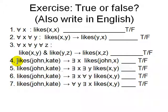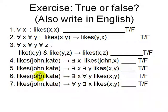Given John likes Kate: Is it true that there exists somebody John likes? Yes, that's true. Is there an X and a Y such that X likes Y? Yes, that's also true. Is there an X such that X likes everyone — For all Y, Likes(X, Y)? No, that's not the case. So that's about quantifiers — you can say pretty much a lot of things. There will be more complicated logics in the next lecture.